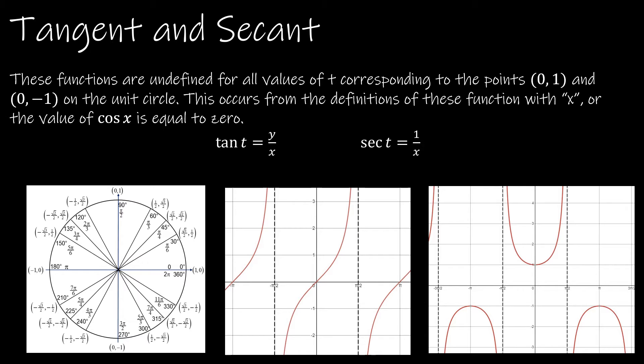The functions of tangent and secant are not defined everywhere. They do have asymptotes, so they do have areas of discontinuity. And they are all directly related to how we define tangent and secant.